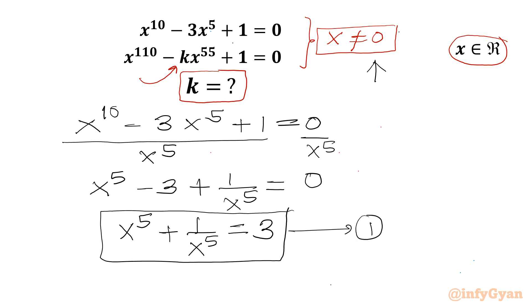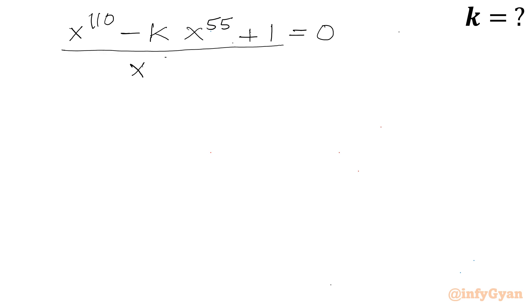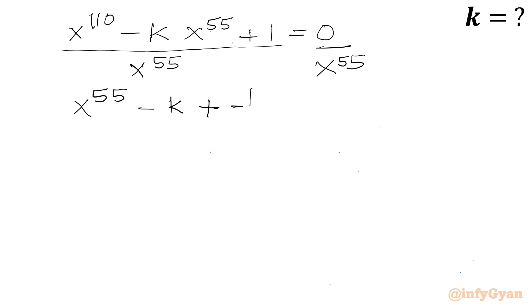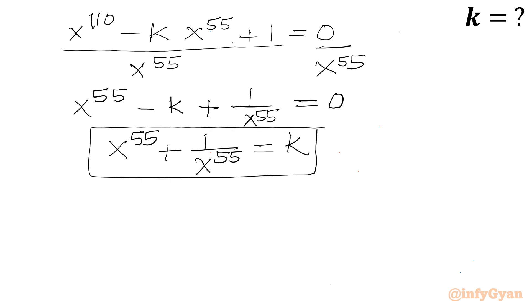Now let us consider our second given equation: x power 110 minus k times x power 55 plus 1 equal to 0. I will divide both sides by x power 55. So I can write x power 55 plus 1 over x power 55 equal to k. Let me call this equation number 2.